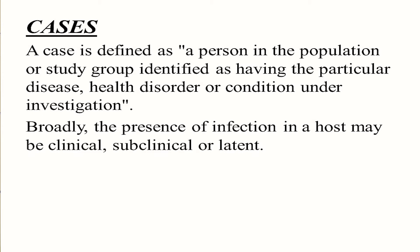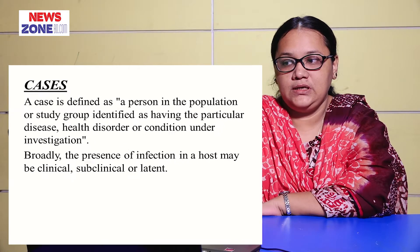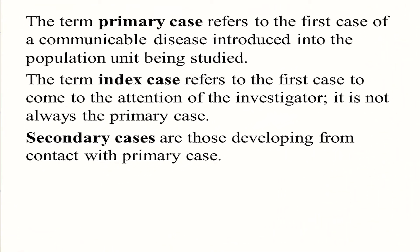A case is defined as a person in the population or study group identified as having the particular disease, health disorder, or condition under investigation. Broadly, the presence of infection in a host may be clinical, subclinical, or latent. Cases are also of three types: primary case, index case, and secondary case. The primary case refers to the first case of a communicable disease introduced into the population unit being studied. The index case refers to the first case to come to the attention of the investigator or doctor — it is not always the primary case. Secondary cases are those developing from contact with the primary case.